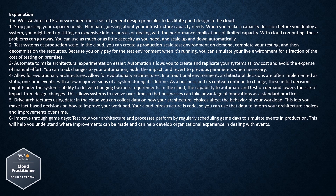Principle 5: Drive architectures using data. In the cloud, you can collect data on how your architectural choices affect the behavior of your workload. This lets you make fact-based decisions on how to improve your workload. Your cloud infrastructure is code, so you can use that data to inform your architecture choices and improvements over time. Principle 6: Improve through game days. Test how your architecture and processes perform by regularly scheduling game days to simulate events in production. This will help you understand where improvements can be made and can help develop organizational experience in dealing with events.